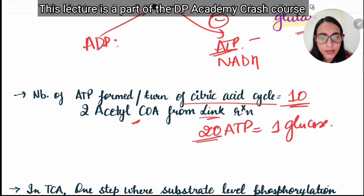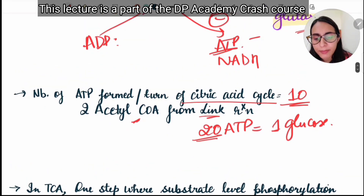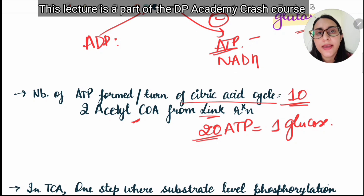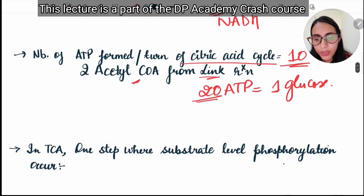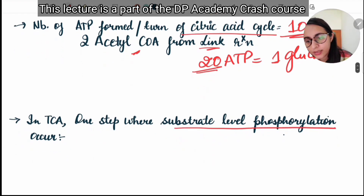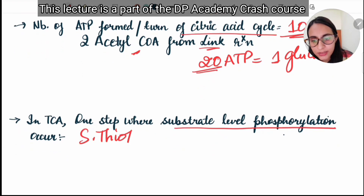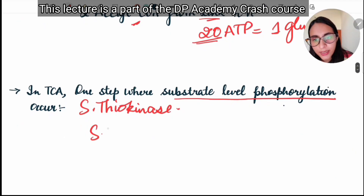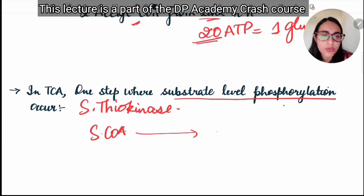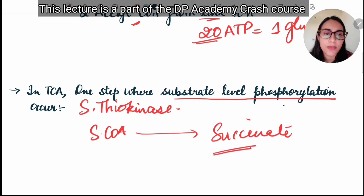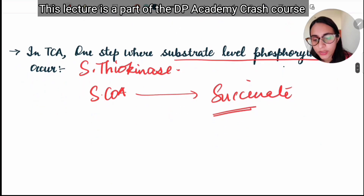Remember: TCA cycle does not occur in RBCs because there is no functional mitochondria. In the TCA cycle, the only step where substrate-level phosphorylation occurs is catalyzed by succinate thiokinase, which converts succinyl-CoA into succinate.